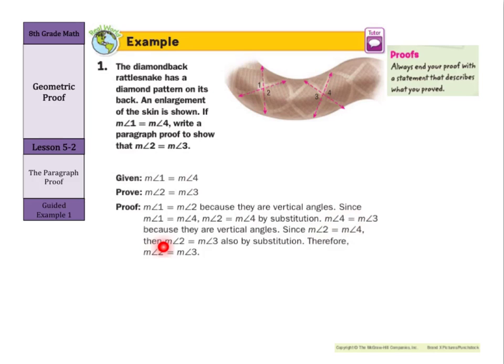If your head is spinning a little bit, that's okay — these are a little tricky. We're using the given information that one and four are equal, trying to prove that two and three are equal. One and two are equal by vertical angles; since one and four are equal, and one and two are equal, two and four must be equal. Then, since four and three are also equal by vertical angles, and we just proved two equals four, two and three are equal. The paragraph proof can sometimes feel like a circle, but let's practice it next.